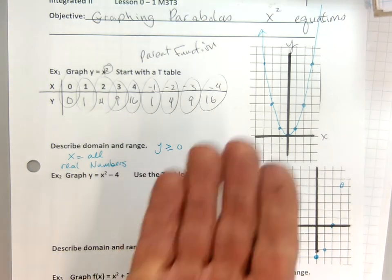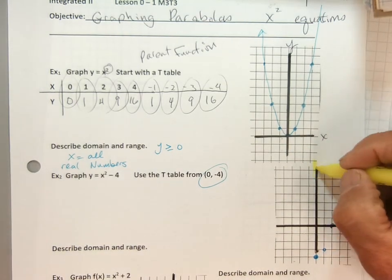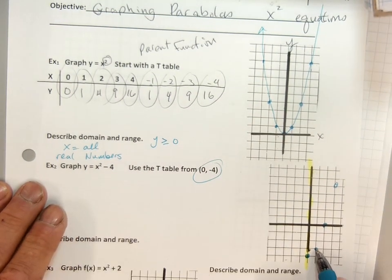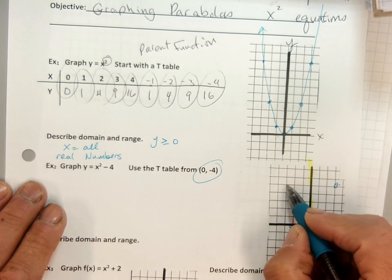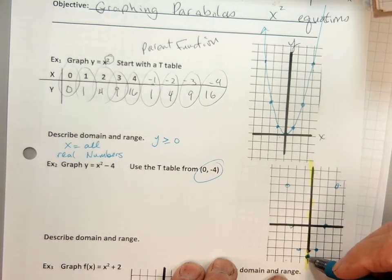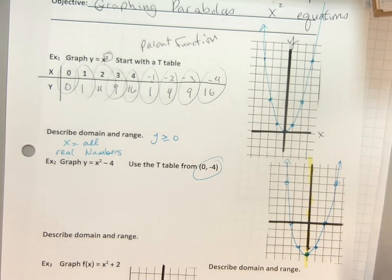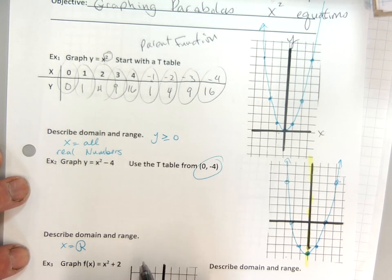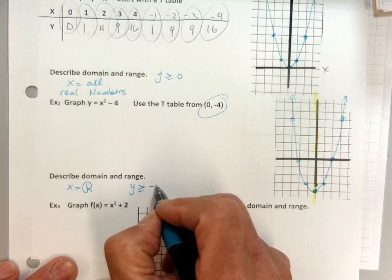So now we know from this picture that a parabola is symmetrical. We can do the other points by just folding over the line of symmetry. Parabola is always symmetrical with its line of symmetry. Now domain and range: the domain has not changed — domain is still x equals all real numbers. But the range is different because it starts way down here at negative 4. So y is greater than or equal to negative 4.